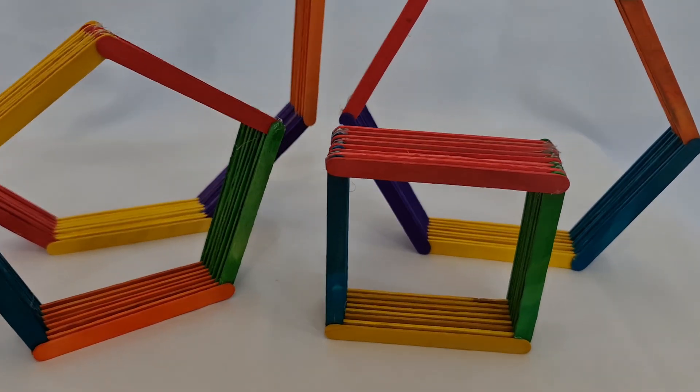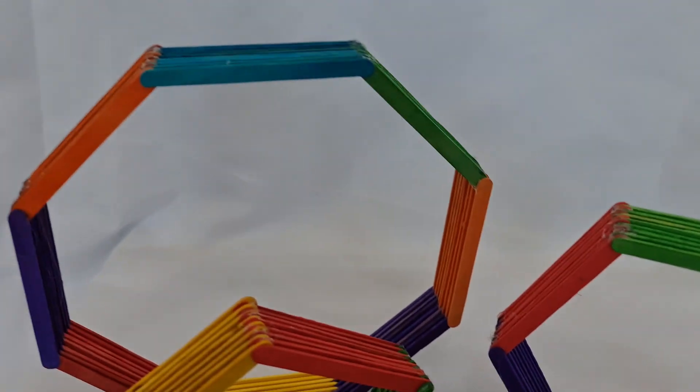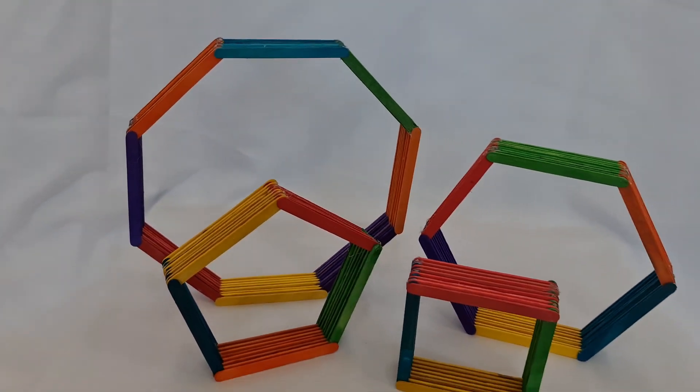A polygon is a flat two-dimensional shape with straight sides that are fully closed. The sides must be straight, not curved.